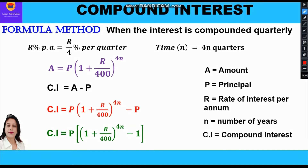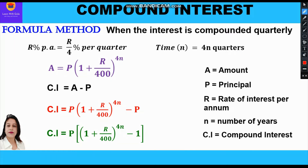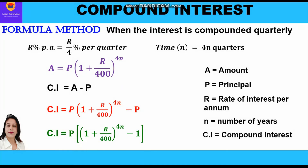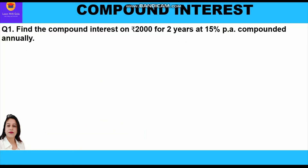When the interest is compounded quarterly, the rate percent per annum becomes r/4 percent per quarter and time n becomes 4n quarters. That means rate of interest is divided by 4 and n is multiplied by 4. Accordingly, amount A = P(1 + r/400)^(4n) and compound interest CI = P[(1 + r/400)^(4n) − 1]. Amount and CI change accordingly when interest is compounded quarterly or half yearly.